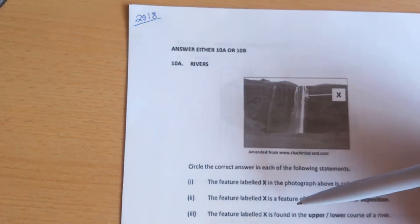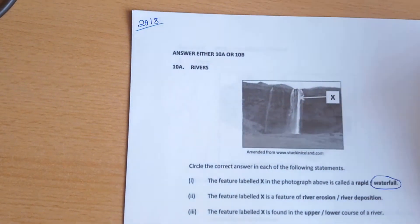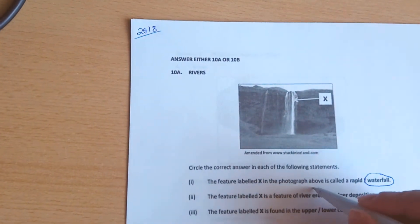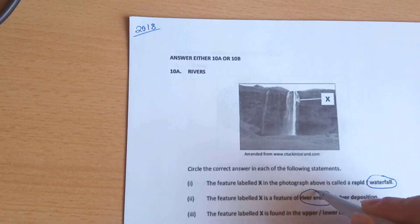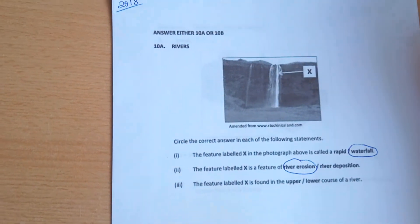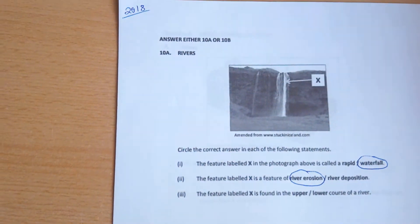The second question asks if feature X is a feature of river erosion or deposition. That would be river erosion, as it's formed by hydraulic action, abrasion, and solution, which are all processes of river erosion.